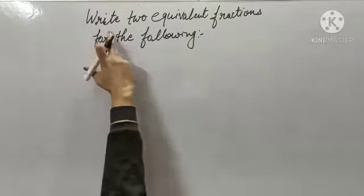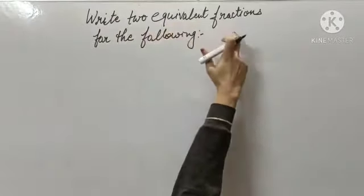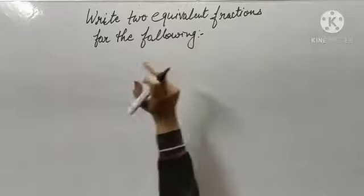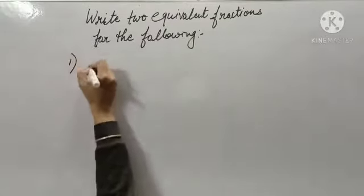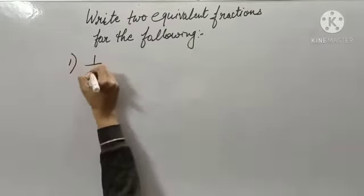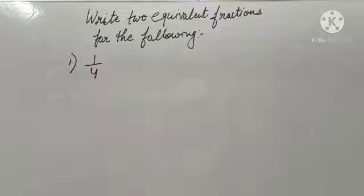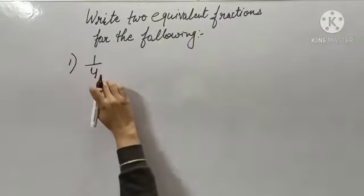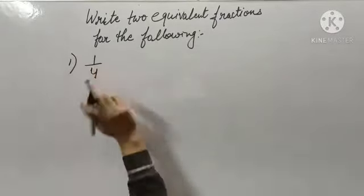So write 2 equivalent fractions for the following. My first question is 1 upon 4. I have to find the 2 equivalent fractions for 1 upon 4.